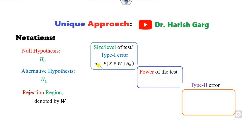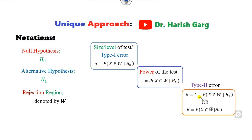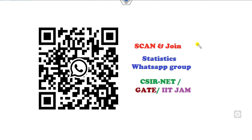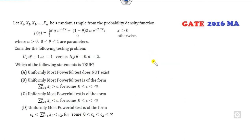Once we define the critical region W, we define the size of the test: alpha = P(X ∈ W | H₀ is true). Similarly, the power of the test = P(X ∈ W | H₁ is true), and type 2 error β = 1 minus power. Based on these three tips and the most powerful test, I can solve all 35 questions within a 15-second trick. Let's start with the first one.